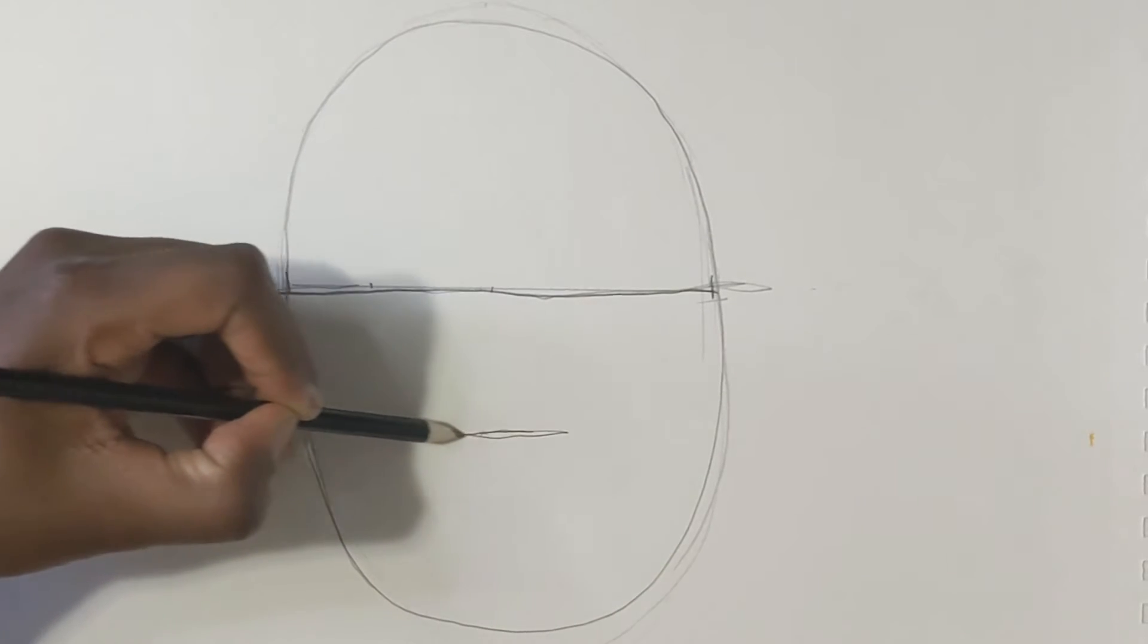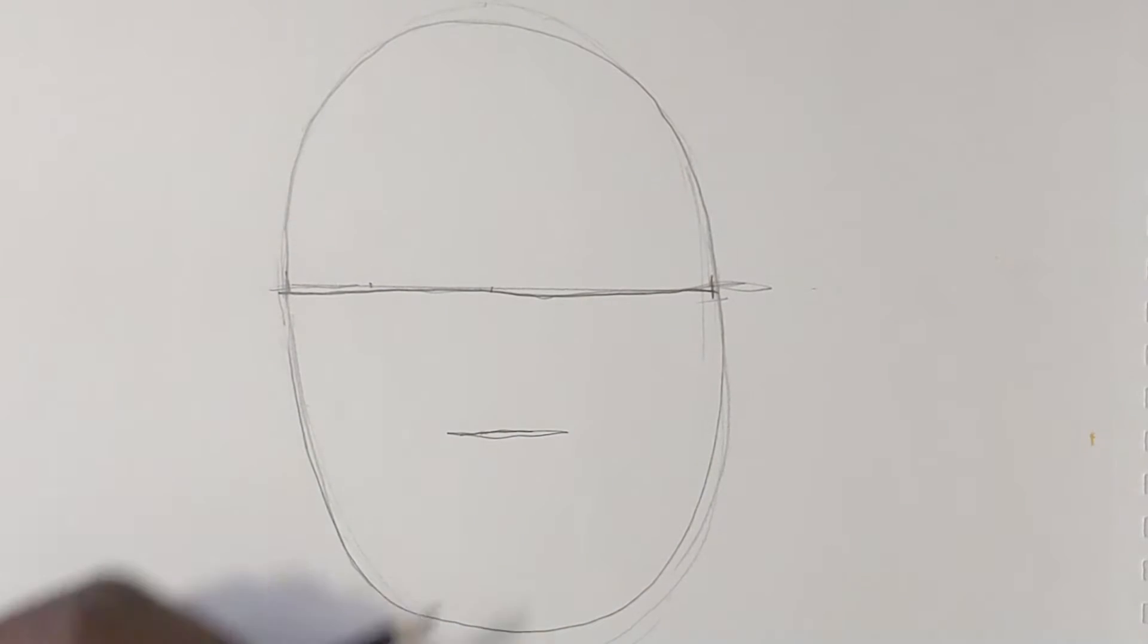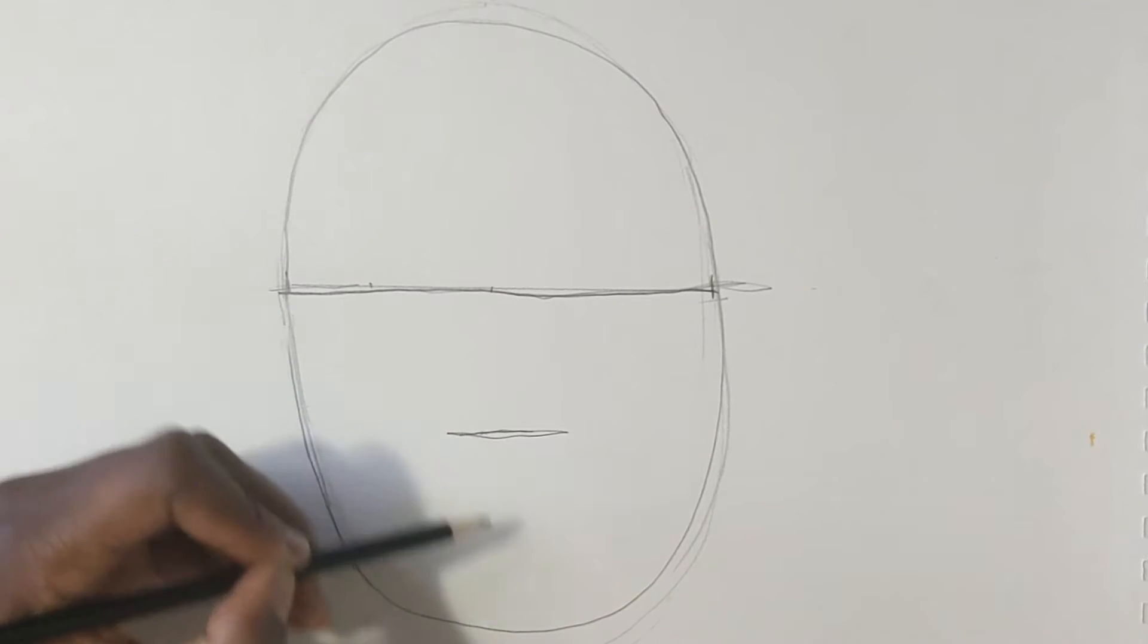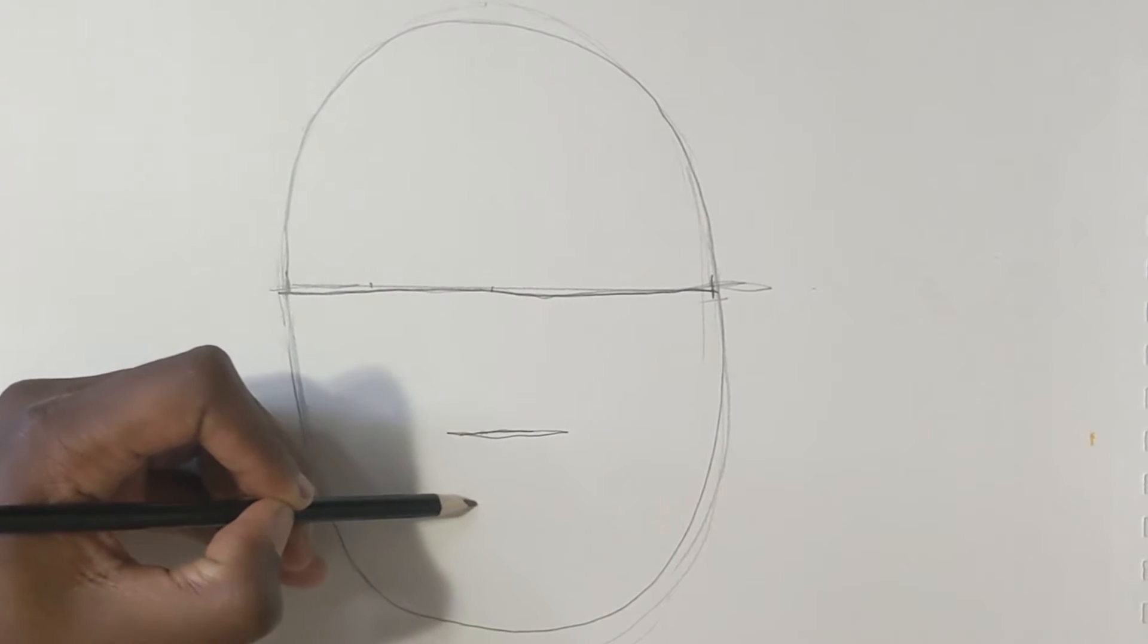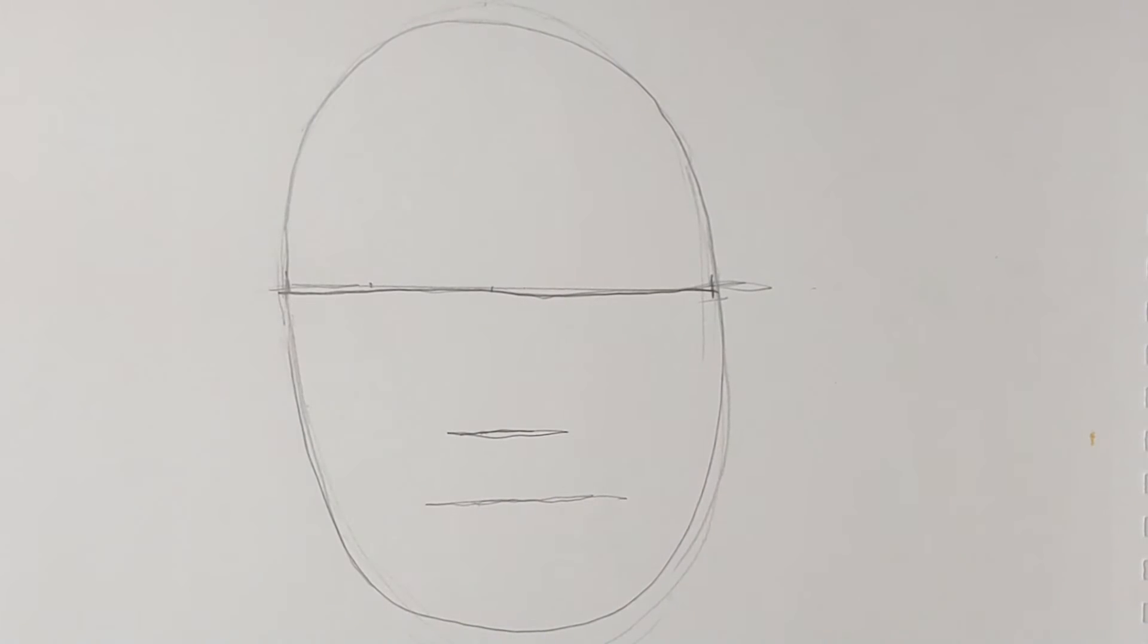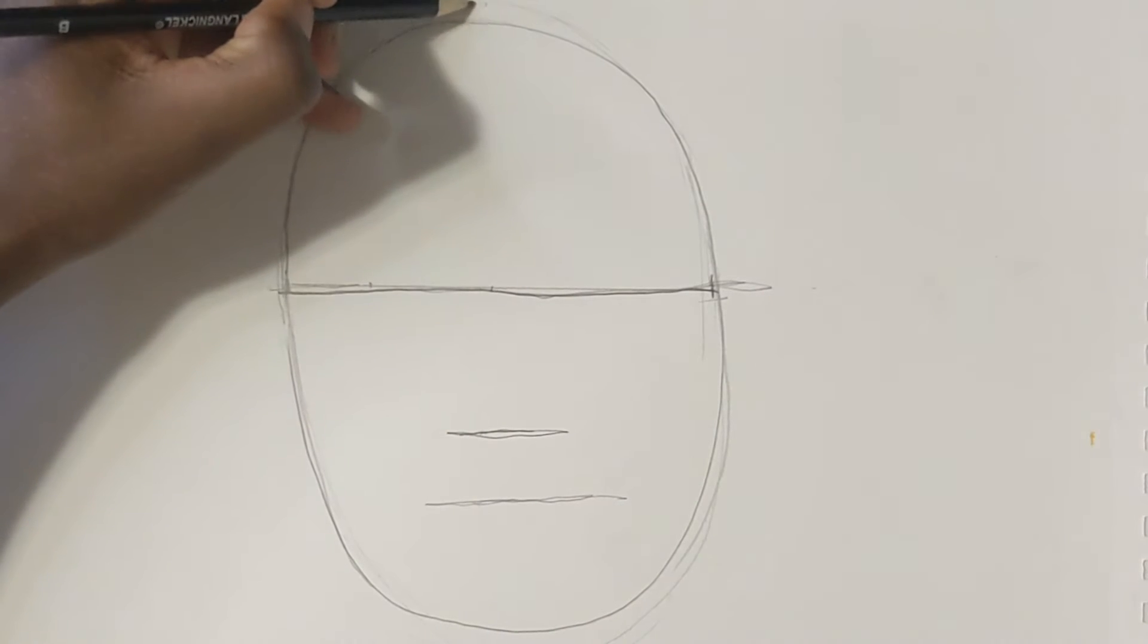Halfway between the bottom of the nose and the chin, we're going to have the lips. Does that have to be exactly perfect, measured with a ruler? No, but if it's close, that's what's going to make your face look nice and proportional. Let's put a line down the middle so we know where the center is.